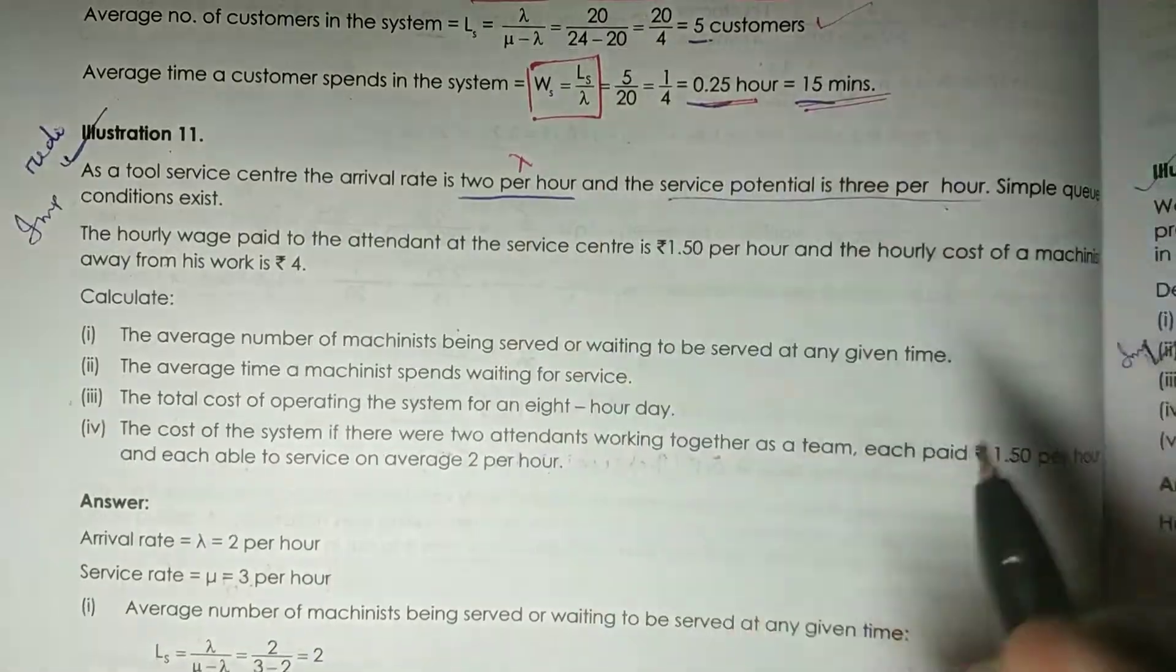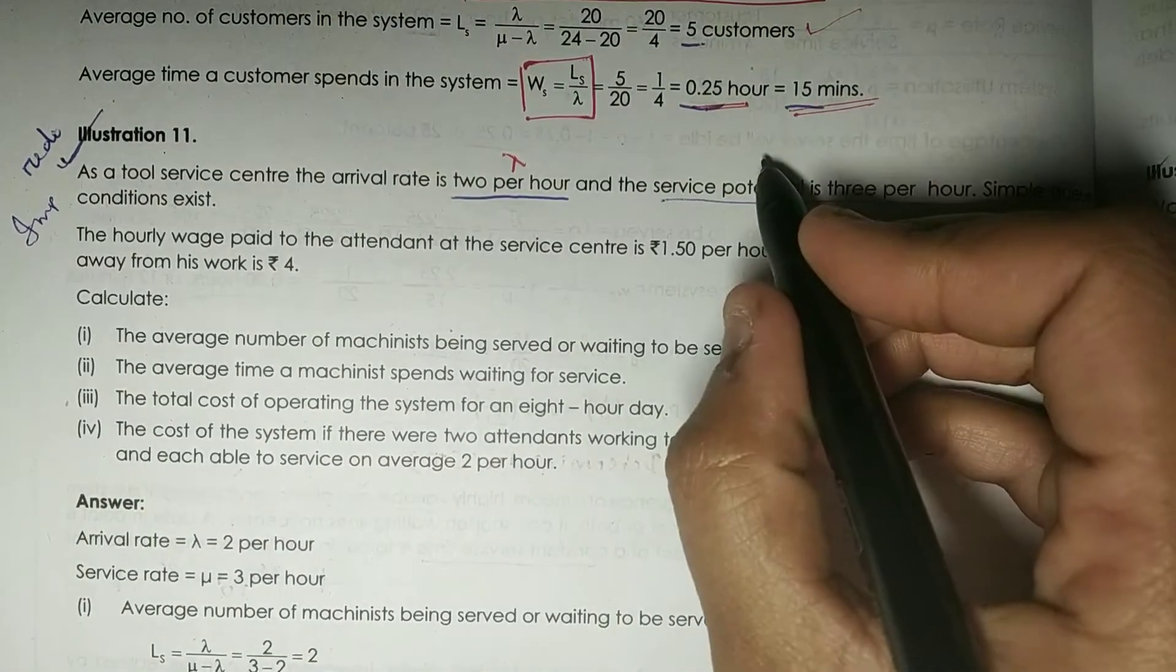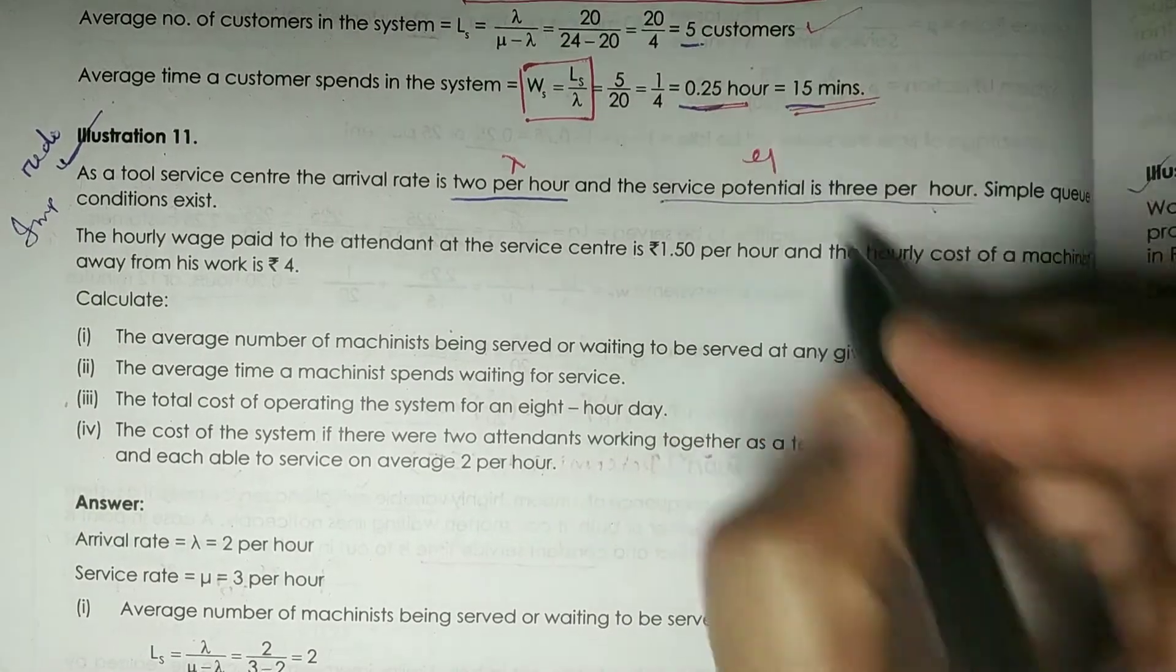And the service potential is 3 per hour. That means this is your service rate, which is mu.